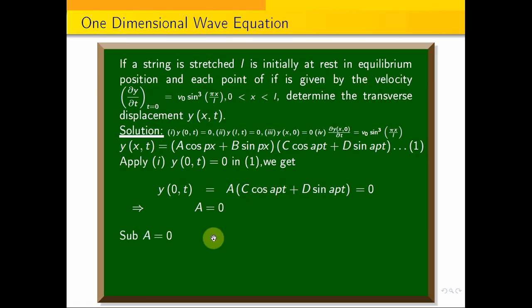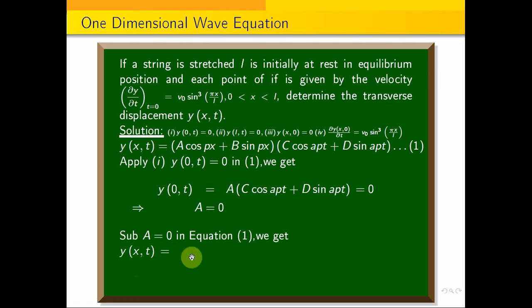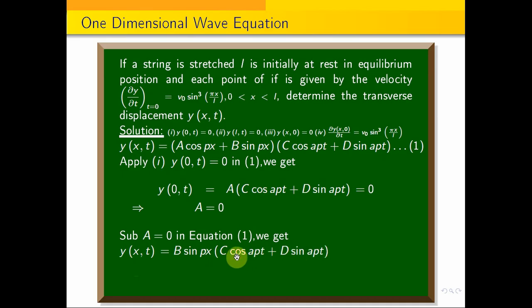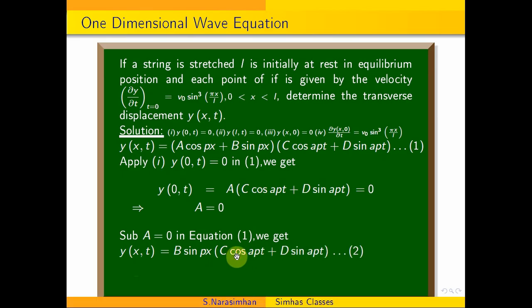Substituting A = 0 into equation 1, we get the updated equation 2: y(x,t) = B sin(px)(C cos apt + D sin apt).